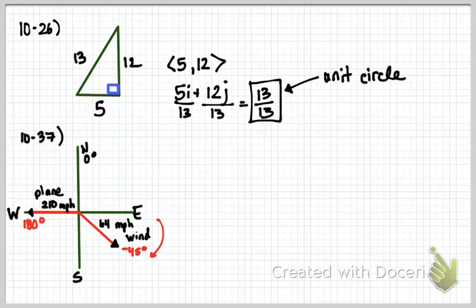So now we have our components. We can figure out our components. Think of the plane. It will be A equals 210 cosine of 180. And B equals 210 sine of 180. And we can do these calculations in our calculator.